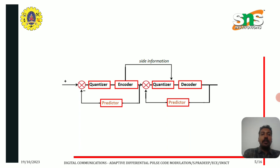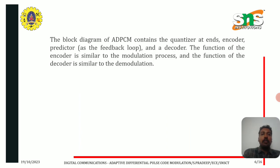This is the block diagram of the Adaptive Differential Pulse Code Modulation technique. The block diagram of ADPCM contains the quantizer at both ends, an encoder, a predictor as a feedback loop, and a decoder.